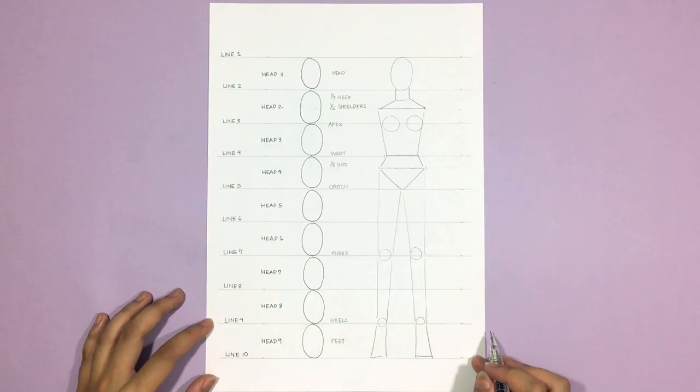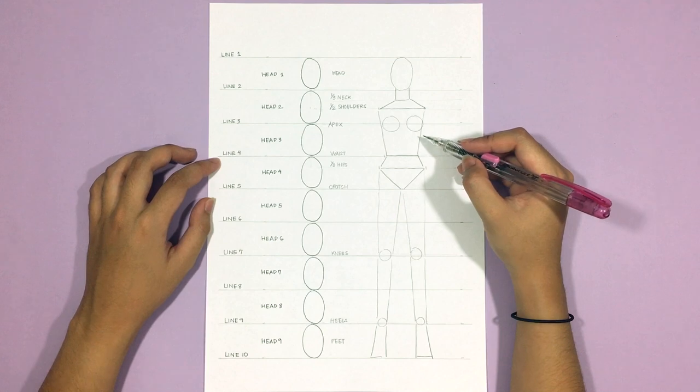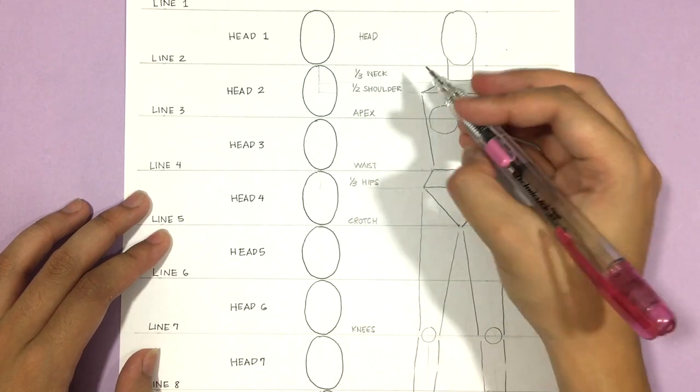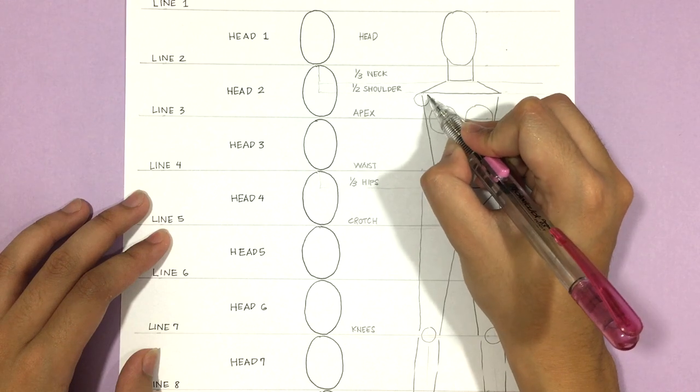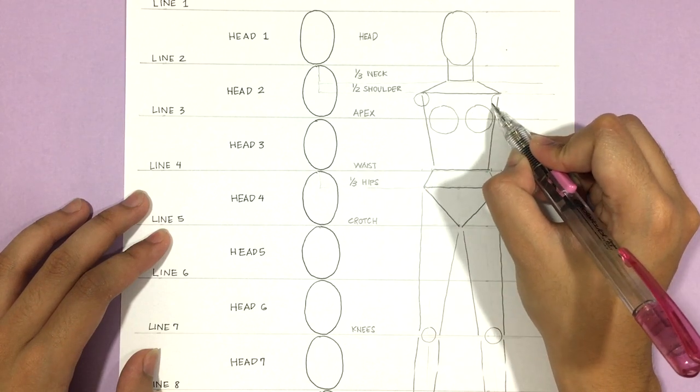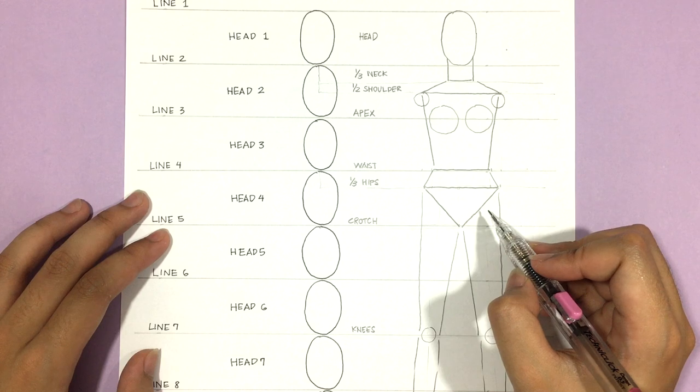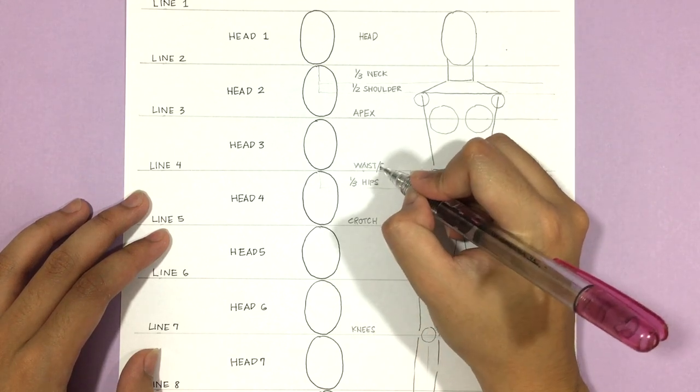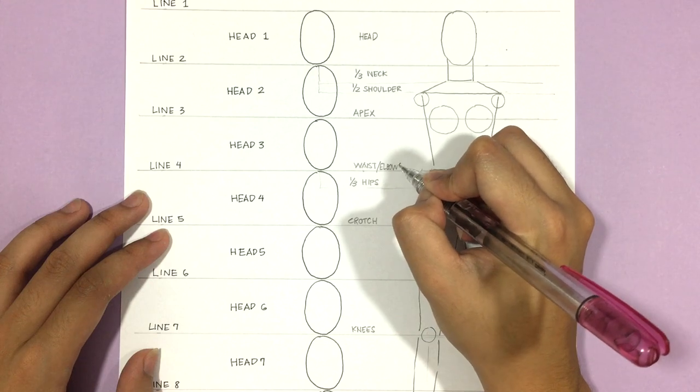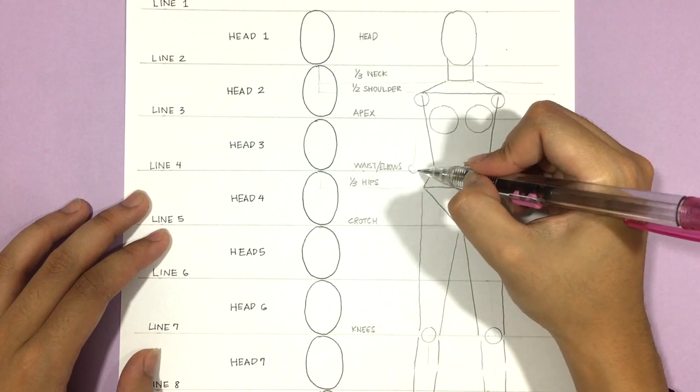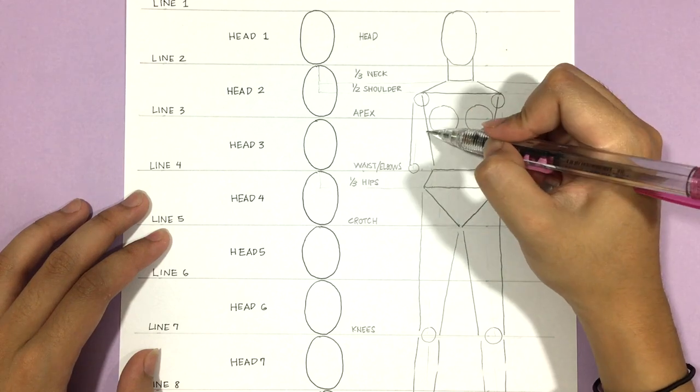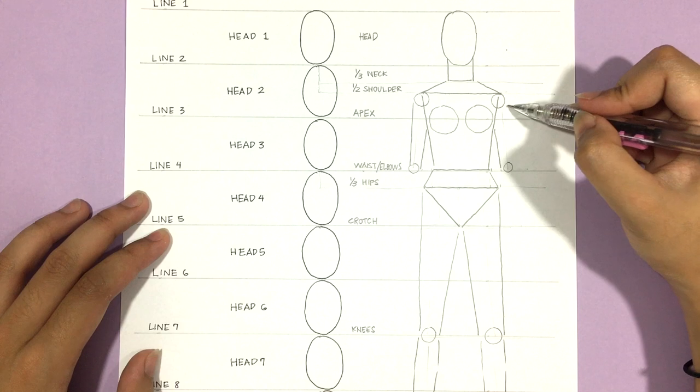And we're almost done. Now it's just time to add in the arms. So I drew two circles where the shoulders are just at the edge of the shoulder line. And I will connect that to the top of head four where the waistline is because it is also the line for the elbows. And once again, I am drawing circles for the joints and connecting those back to the shoulders.